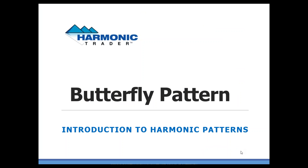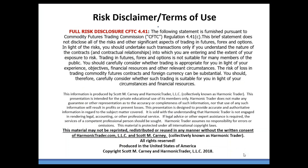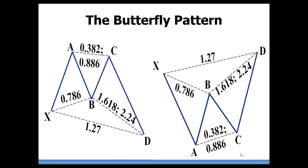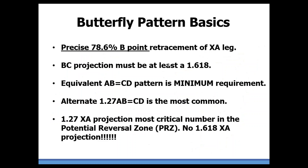Introduction to Harmonic Patterns — the Butterfly Pattern. We're looking at two illustrations of what a Harmonic Butterfly Pattern looks like, differentiated by specific measurements, namely the B-point at the .786. We'll get into the specifics here, looking at some examples in a minute, but these are the structures that have become the industry standard.